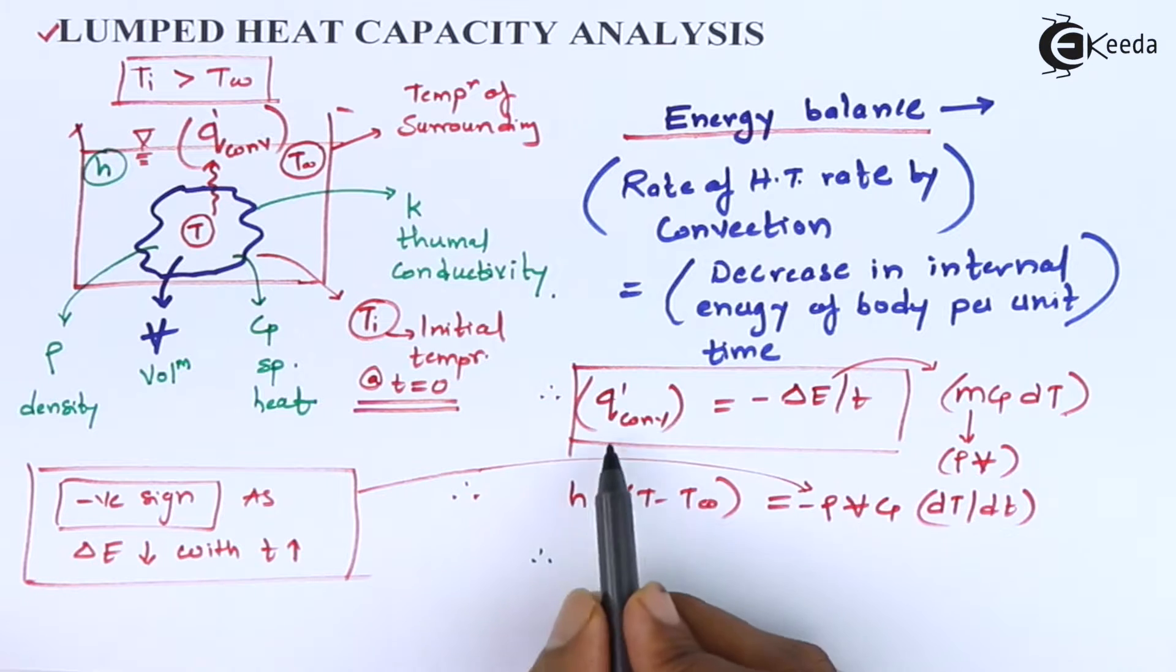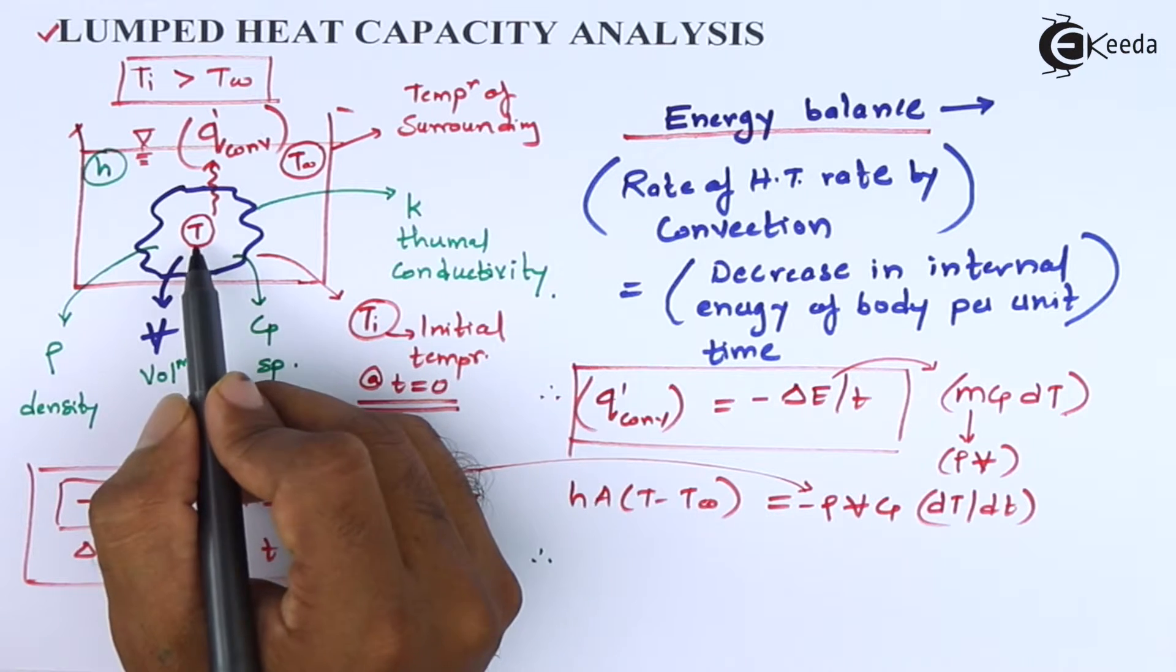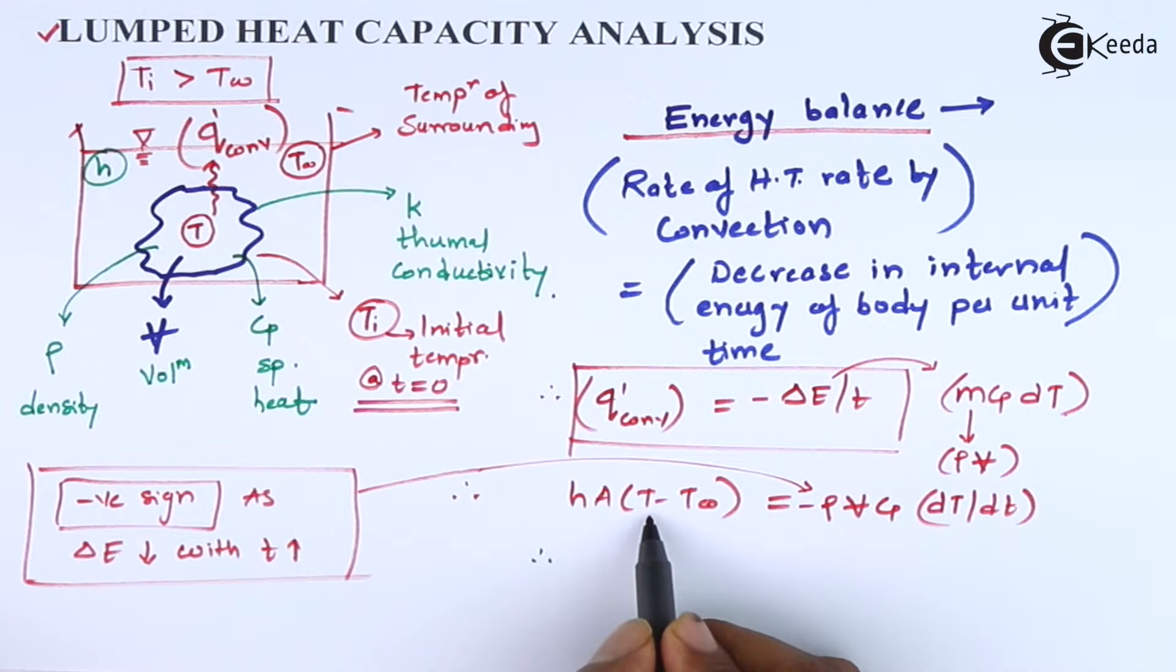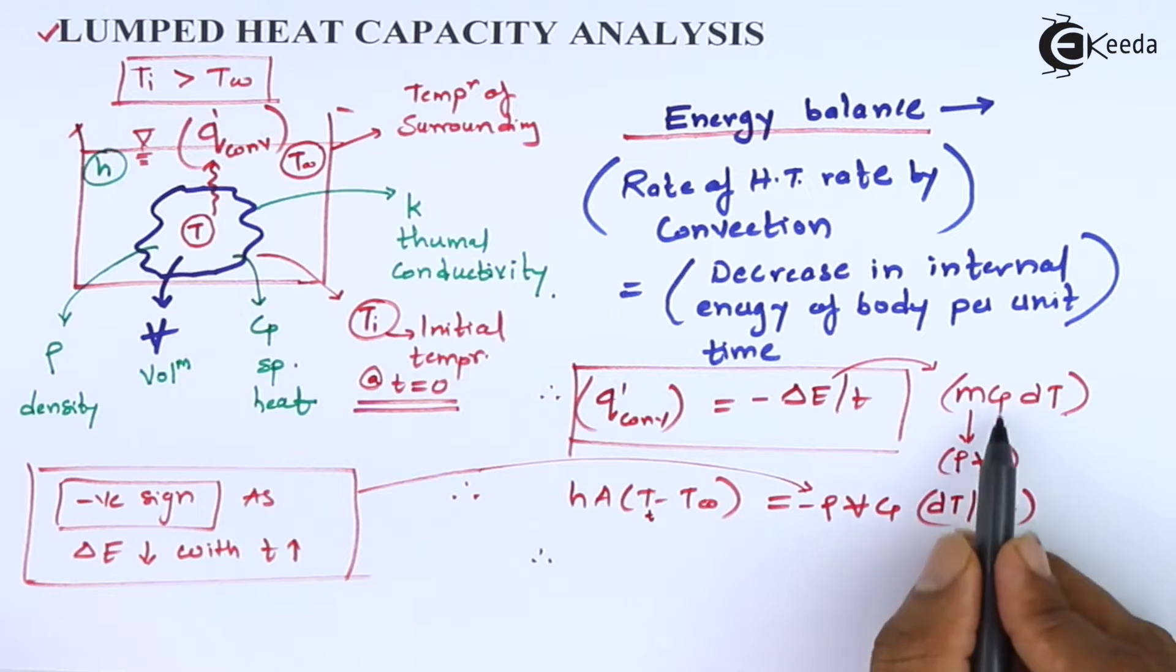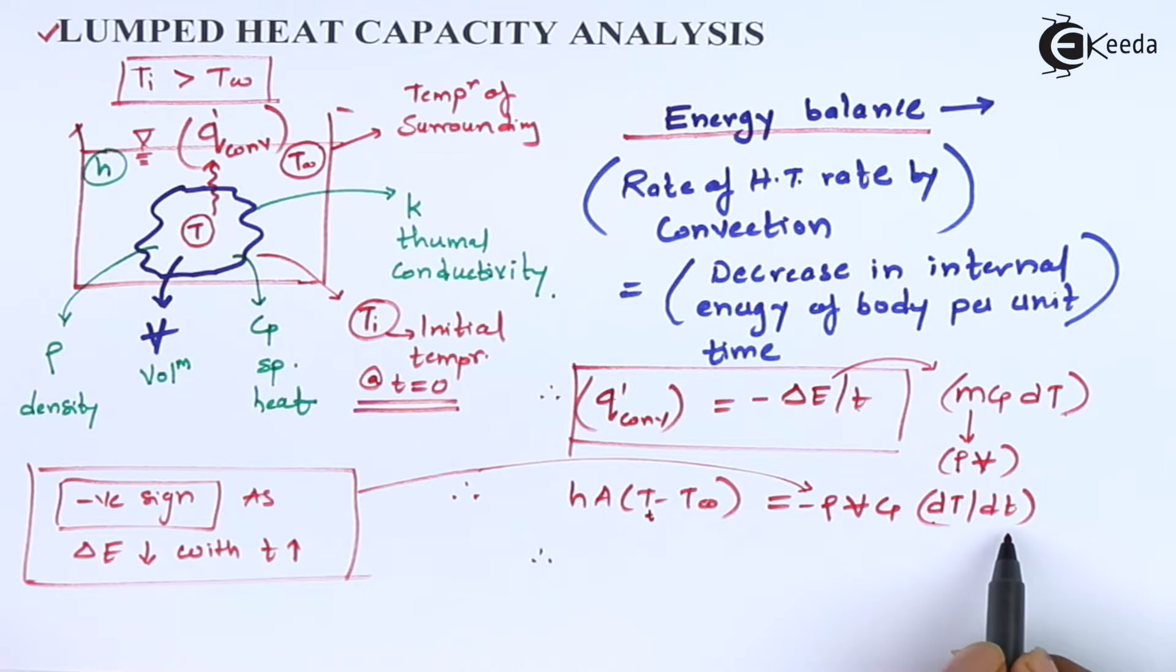Now if I write down all the other parameters, we know that Q' convection is given by Newton's law of cooling as HA delta T, where delta T is T minus T infinity, where T is the instantaneous temperature. So T indicates the temperature at time t, so it can be written as T minus T infinity equals minus density into volume, that is the mass into CP into dt upon time t. Now this time t I have tried to express for the infinitesimal small value, so I can write this as dT by dt.